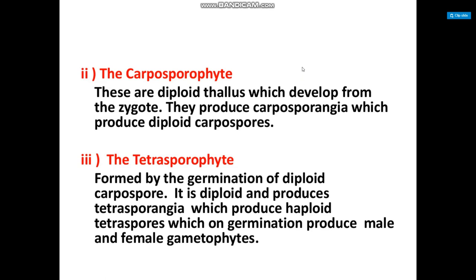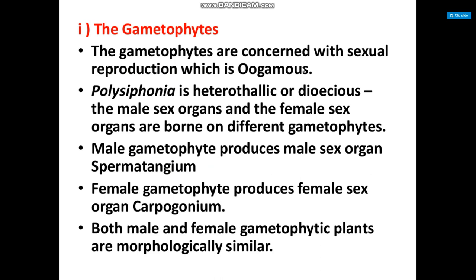The tetraspores on germination produce male and female gametophytes. The gametophyte and the tetrasporophyte are concerned with sexual reproduction. Polysiphonia is heterothallic and dioecious — the male sex organ and the female sex organ are borne on different gametophytes.